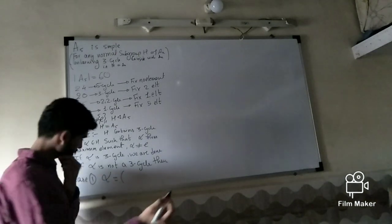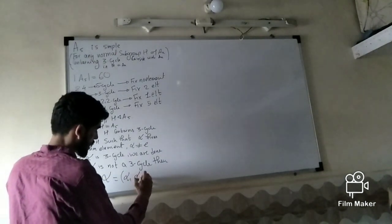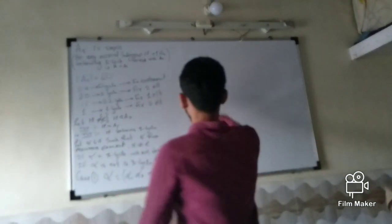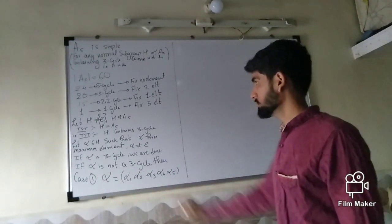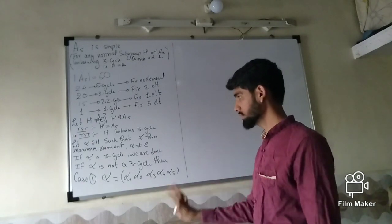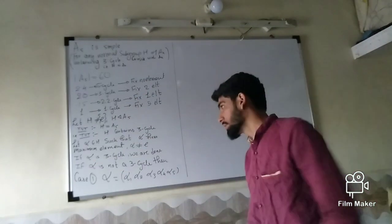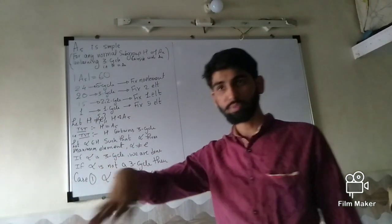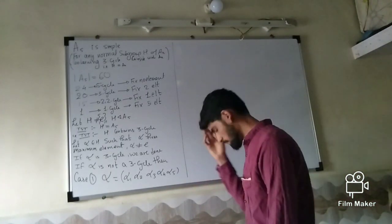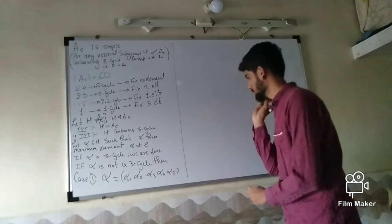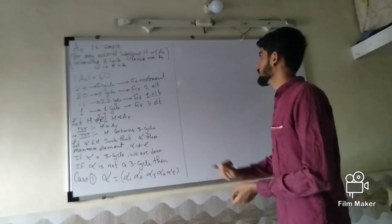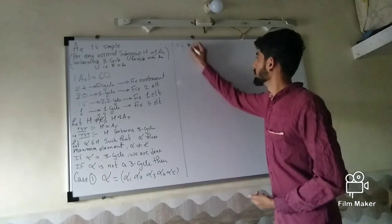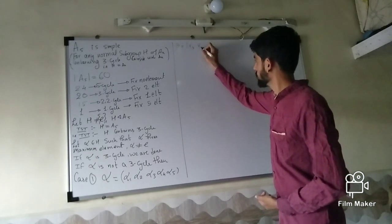Case 1: alpha is a 5-cycle. Let alpha equal (α1 α2 α3 α4 α5). Since alpha is a 5-cycle, it fixes no element, which is the maximum in this case. We want to derive a contradiction by constructing an element in H that fixes more elements than alpha. We consider the element beta equal to (α3 α4 α5).